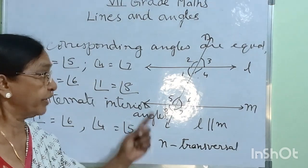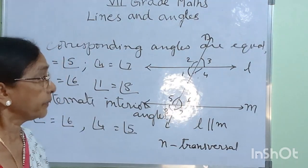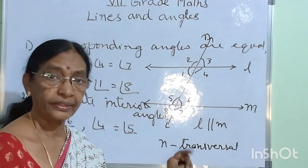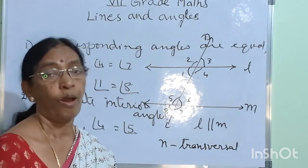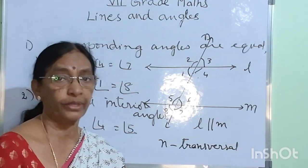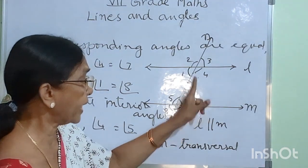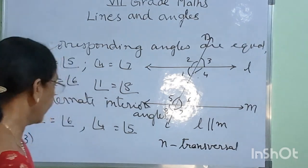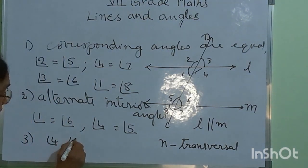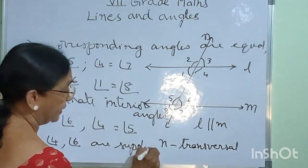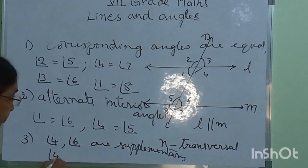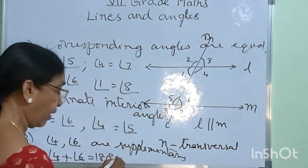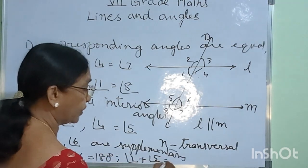The third rule is: when two parallel lines are intersected by a transversal, the interior angles lying on the same side of the transversal are supplementary. Supplementary angles means the sum of the two angles is equal to 180 degrees. Interior angles lying on the same side are angle 4 and angle 6, one pair, and angle 1 and angle 5 are another pair. Therefore, angle 4 and angle 6 are supplementary, meaning angle 4 plus angle 6 is equal to 180 degrees.